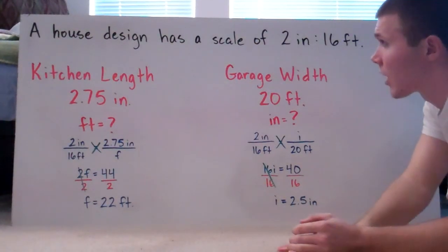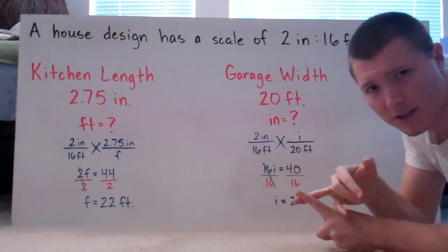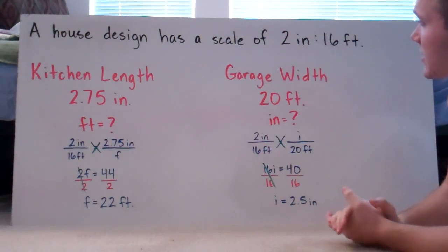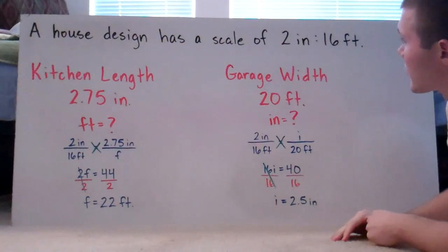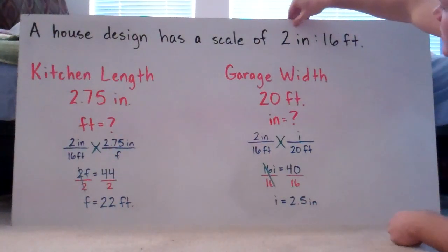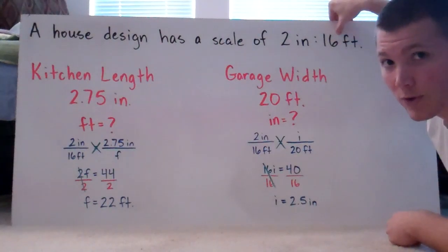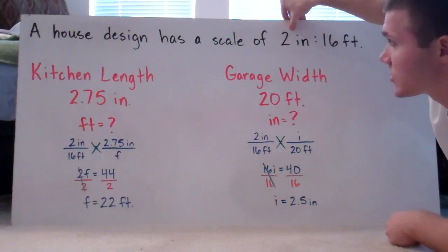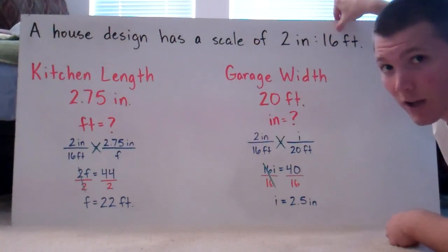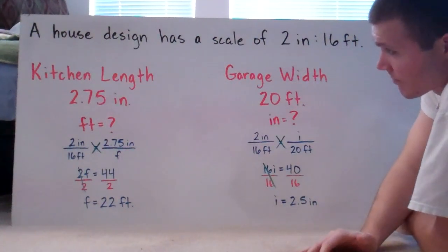Scale drawings are used all the time in house designs and building construction. For this problem, a house design has a scale of two inches for every 16 feet. So every two inches on the drawing equals 16 feet in real life.